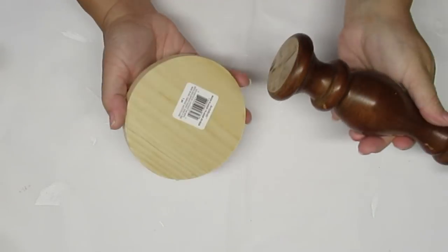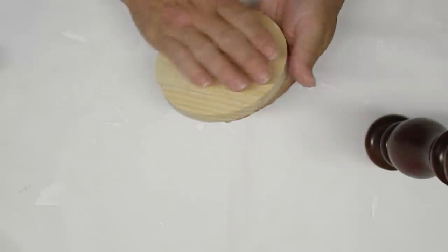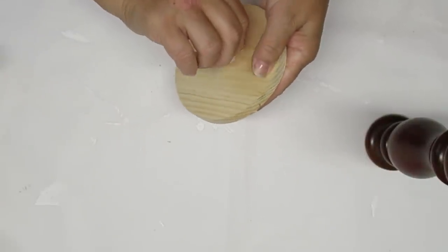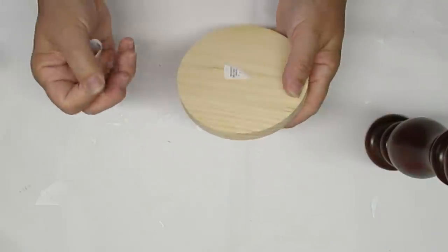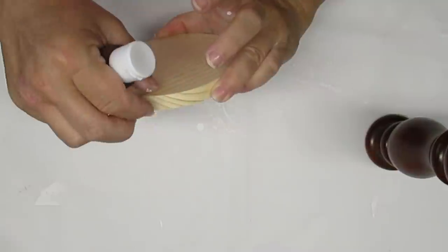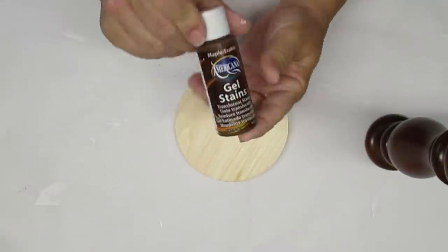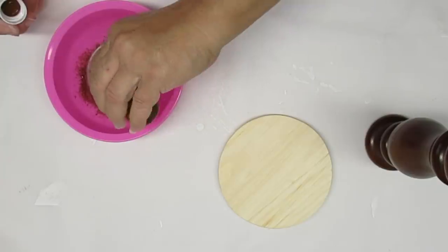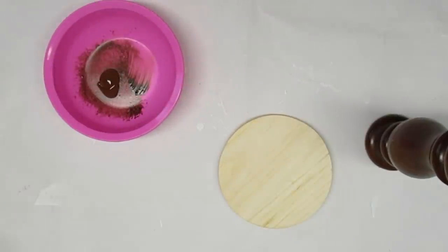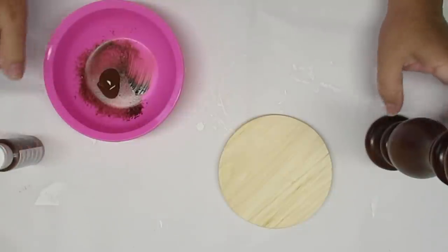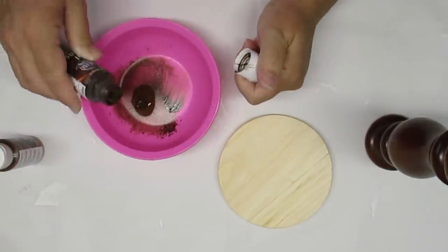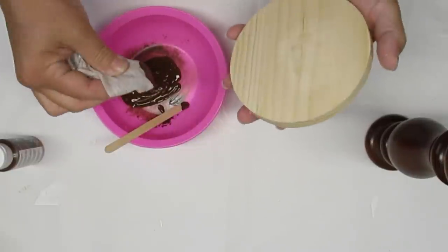The last project I have for you today is using this spindle that came from a bed that was at the side of the road, and this round wood disc is from Michael's. I can't find any of the ones that they have at the Dollar Tree. My Dollar Trees don't seem to carry a lot of wood crafts, so I went to Michael's and I found these for $1.50, which is only 25 cents more than I would have to pay at the Dollar Tree, since in Canada you pay $1.25 and sometimes $1.50 for items at the Dollar Tree.